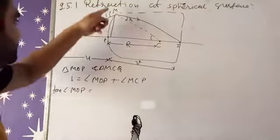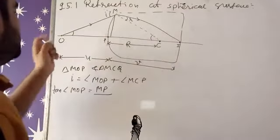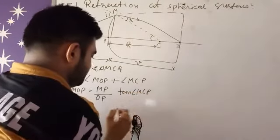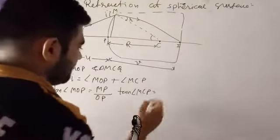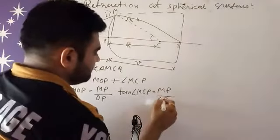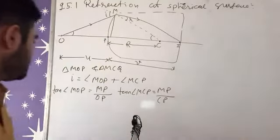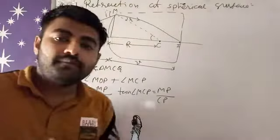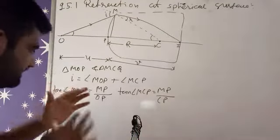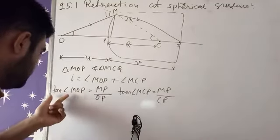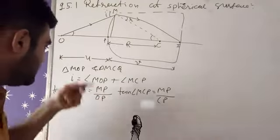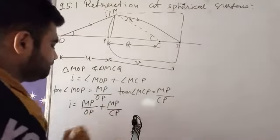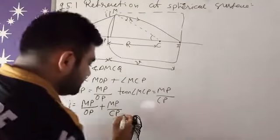From the first formula, angle MOP — its tangent equals the opposite side MP over the adjacent side OP. Similarly, tan of angle MCP equals MP over CP, which is our capital R. Since all these angles are very small, the tangent equals the angle itself. So angle i equals MP over OP plus MP over CP. This is equation one.